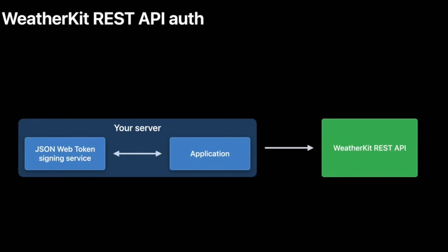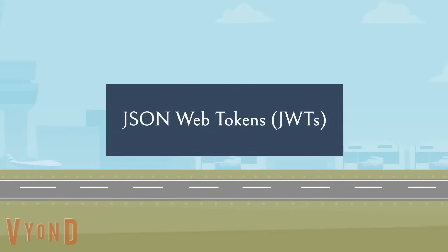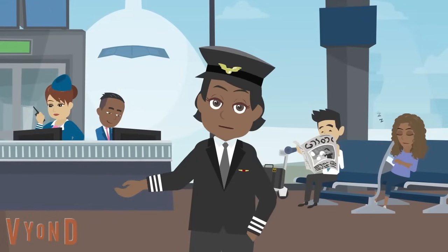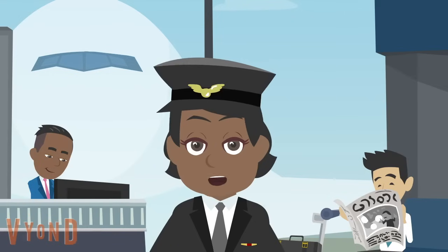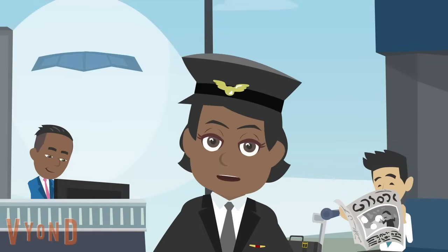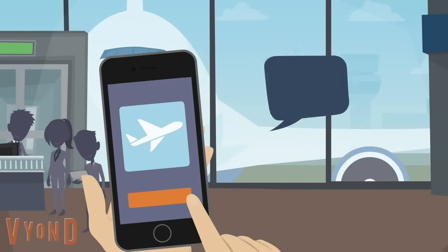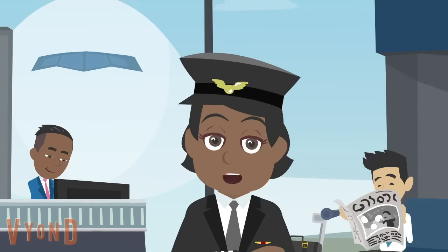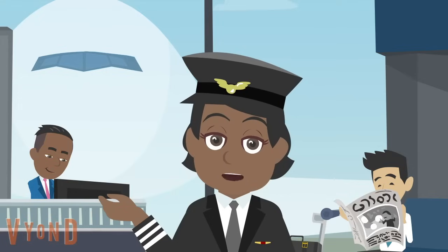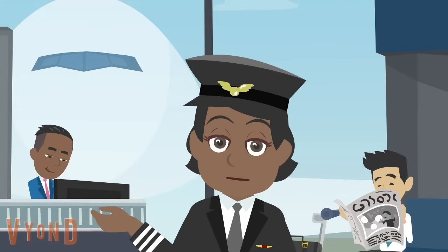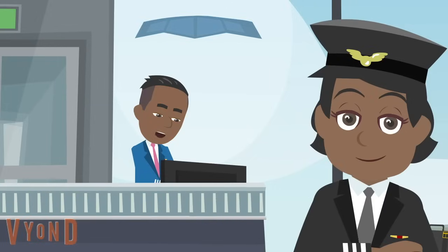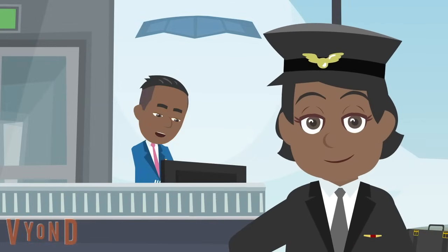However, integrating WeatherKit posed a unique challenge, particularly in setting up the JSON Web Token — a secure method to authenticate requests to the REST API. Have you ever been on a flight? You know how tickets are checked at the entrance to make sure they're valid? Well, JSON Web Tokens, or JWTs, are like digital tickets for online services — secure digital passes that let you access certain areas or services online.